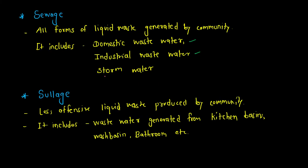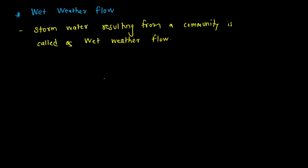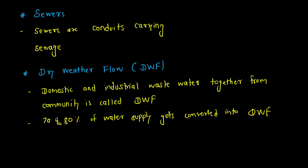We have seen definitions of sewage, sewers, and dry weather flow and wet weather flow. Dry weather flow is the domestic and industrial waste from the community — around 70 to 80 percent of the water supplied gets converted into dry weather flow. For example, if 100 liters of water comes into your house, 70 to 80 liters gets converted into wastewater from flushing toilets, bathing, or washing utensils.